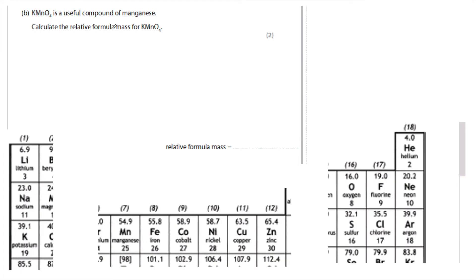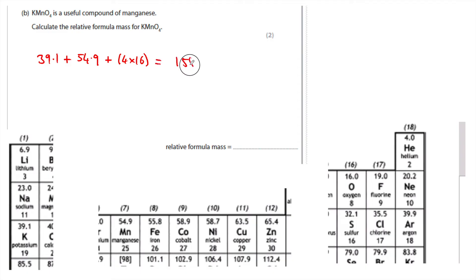Calculate the relative formula mass of potassium manganate. One atom of potassium is 39.1, plus one atom of manganese — a transition metal — which is 54.9, plus four atoms of oxygen at 16 each, giving 4 × 16 = 64. Adding those together: 39.1 + 54.9 + 64 = 158.